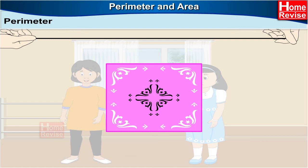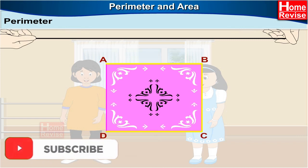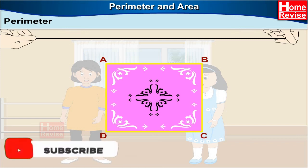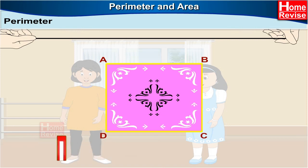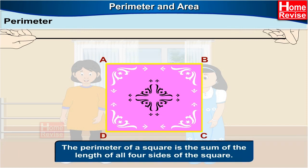ABCD is a square handkerchief. The sum of the length of sides AB, BC, CD and DA is the length of lace needed. This length is called the perimeter of the handkerchief. The perimeter of the square is the sum of the length of all four sides of the square.